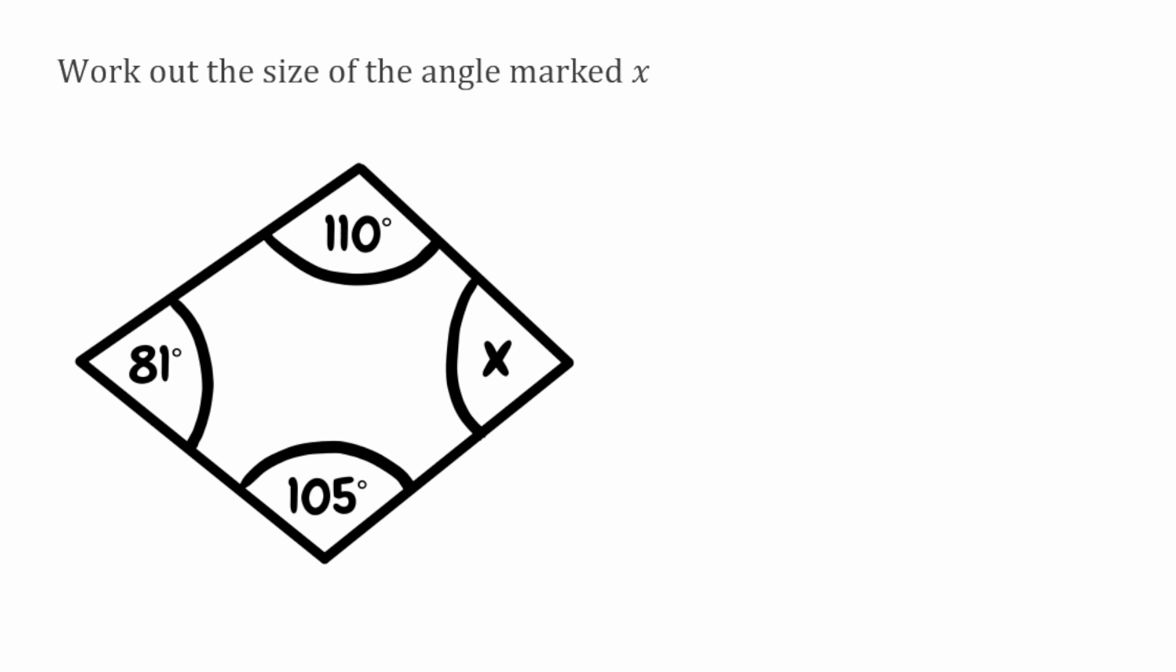For this next question we're going to figure out the missing angle x again. Again we've got three angles of the quadrilateral, so to find the missing one again we're just going to add up the values we know and take that away from 360. So we're going to do 110 plus 105 plus 81, and that's going to give us 296.